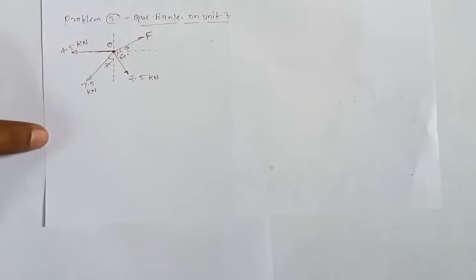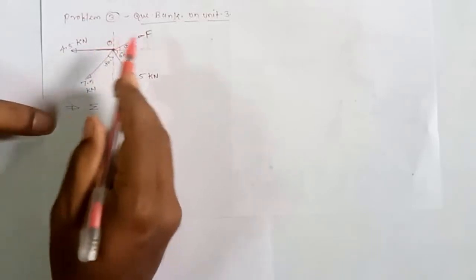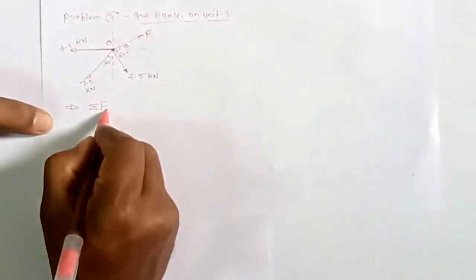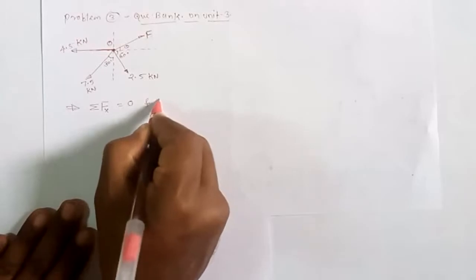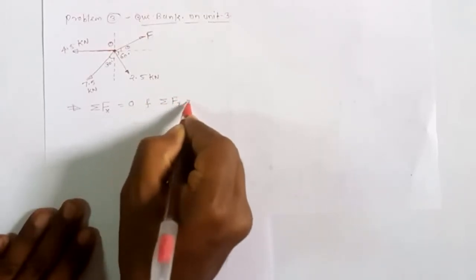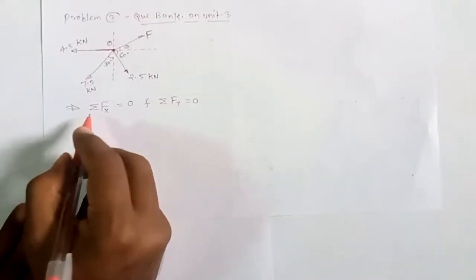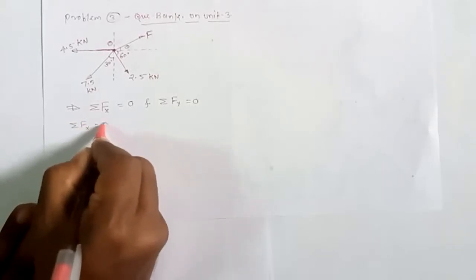We are asked to find the value of force F so that all four forces maintain equilibrium. Since this force system is a coplanar concurrent force system — all forces meeting at one point, the origin — we need only two equilibrium conditions: summation Fx equals zero, and summation Fy equals zero.